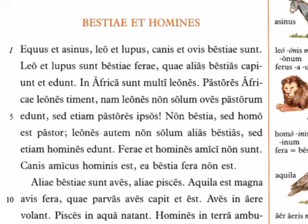Canis amicus hominis est — a dog is a friend of a human. Ea bestia fera non est — it is not a wild animal, meaning a dog is not a wild animal. Notice the word for 'it' here, ea, is feminine, because canis itself can be masculine or feminine — it's a common noun. The reason ea is feminine is because bestia is feminine, so Latin makes the pronoun feminine too.